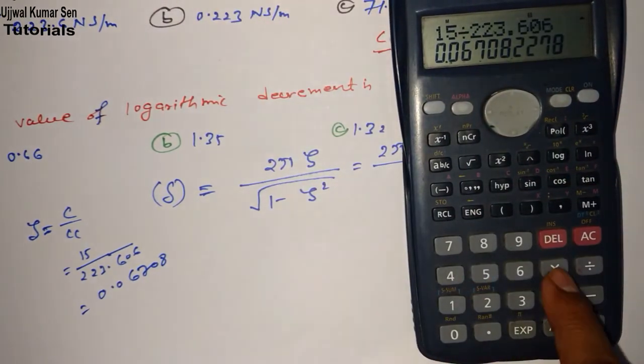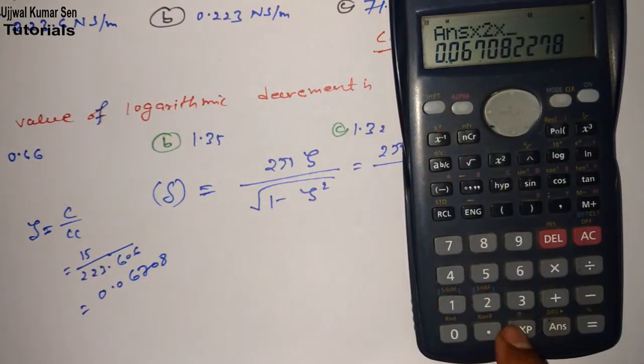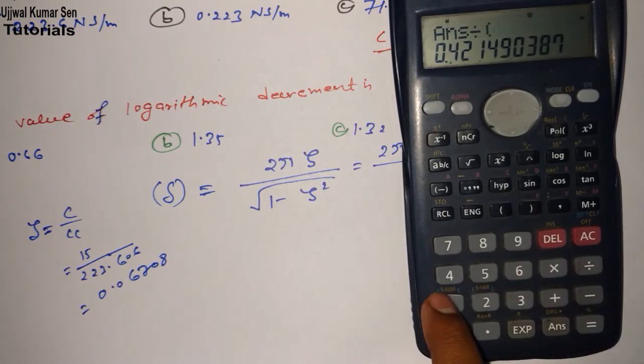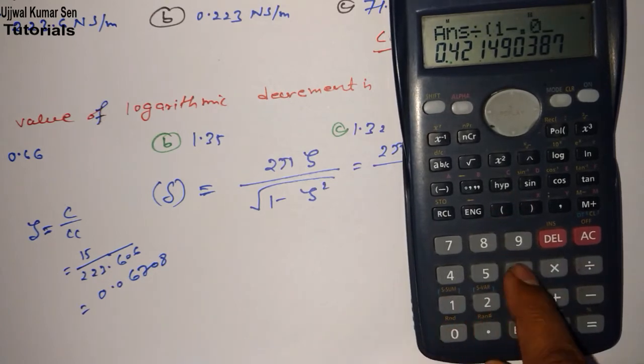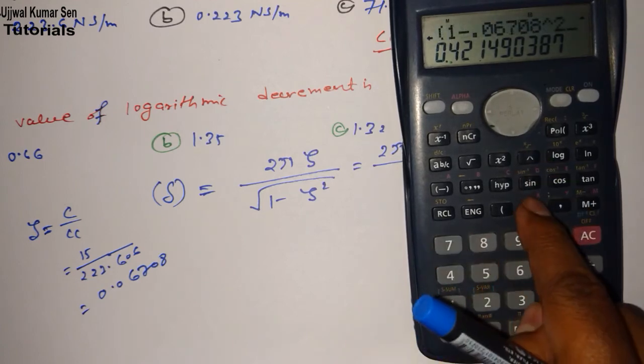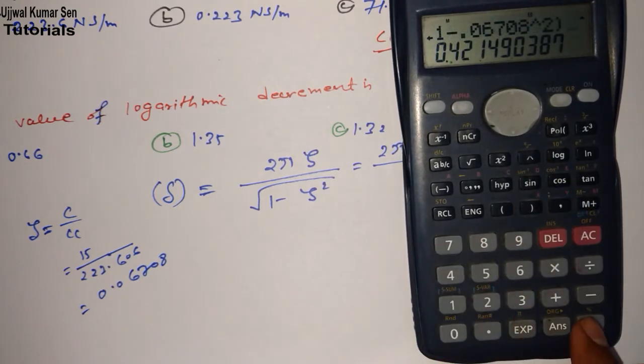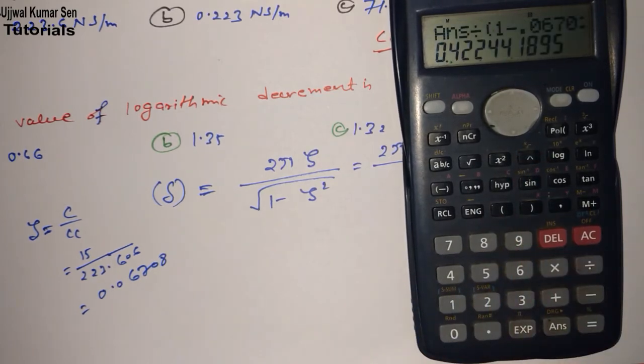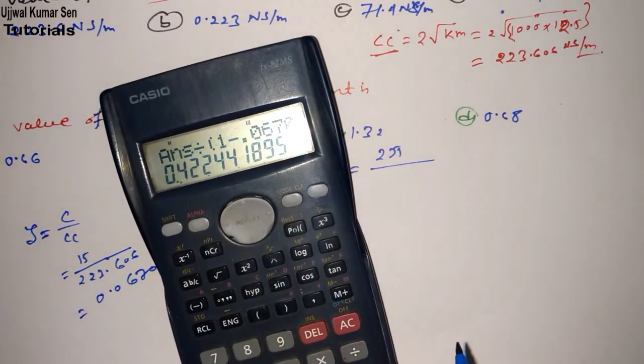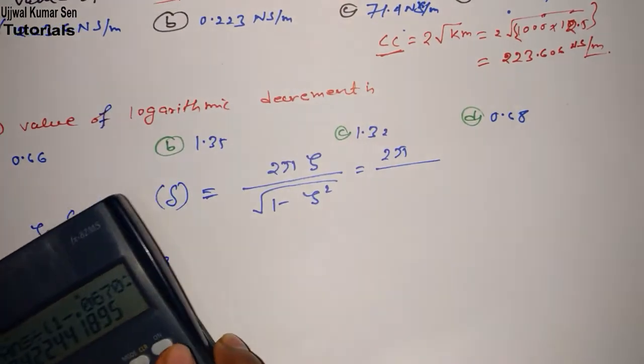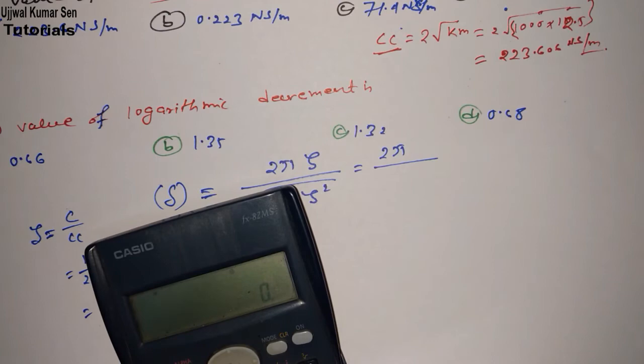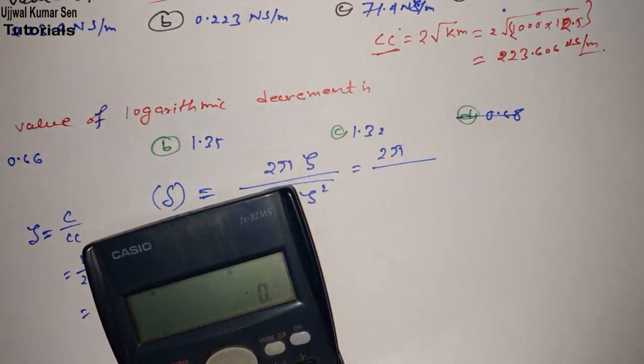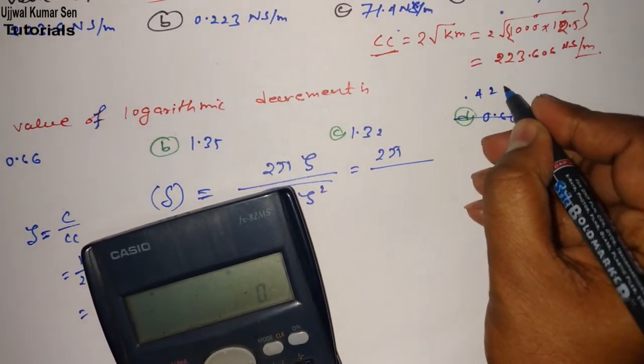Now what we require: we need to multiply this with 2 and then pi, divided by square root of 1 minus 0.06708 whole squared. So what we got from here? We have to find out its root. So what we got value from here is 0.422. And if you'll see the options, we don't have this option. So probably I have written wrong or maybe in the sample paper they have chosen the wrong answer. The answer is 0.422.